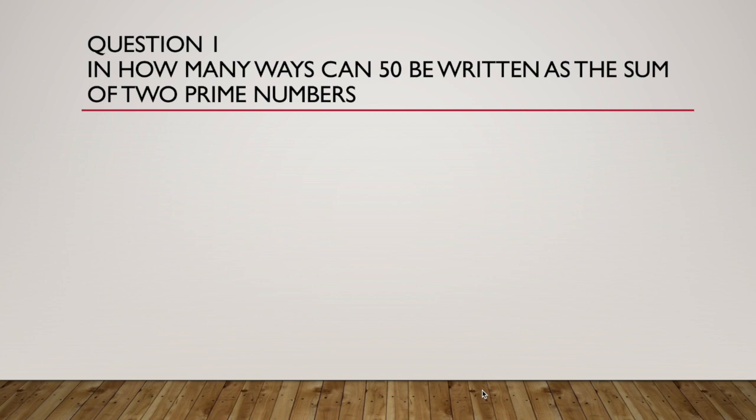So the key thing here is to remember that sum means add. So it's basically adding two numbers together to get 50 and those numbers have to be prime numbers. So first of all let's take a look at all of the prime numbers less than 50. And we've got this list.